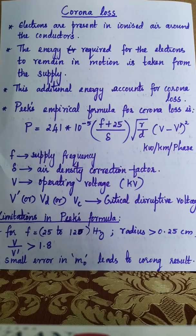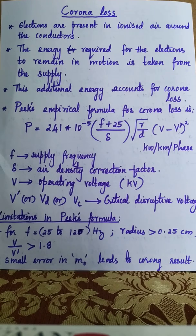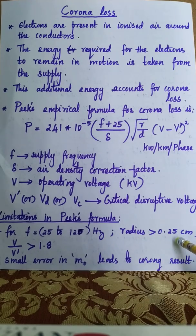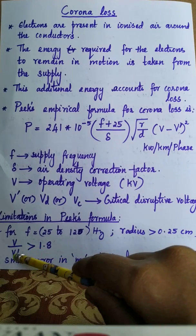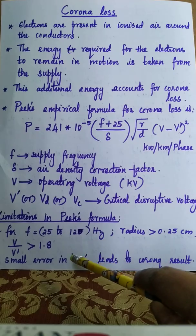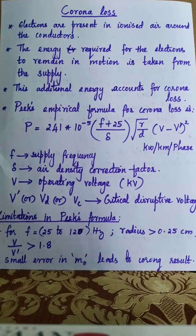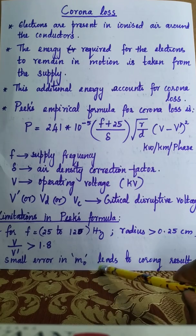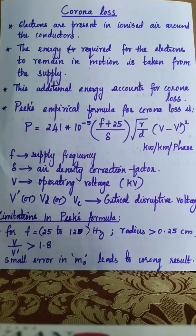The additional energy taken from the supply by electrons to maintain motion and strike air molecules is corona loss. Regarding limitations of Peek's formula: it gives accurate results only for frequencies in the range 25–120 Hz, provided the conductor radius is greater than 0.25 cm and the ratio of operating voltage to critical disruptive voltage is greater than 1.8. Also, a small error in choosing the surface irregularity factor M₀ will make results inaccurate.